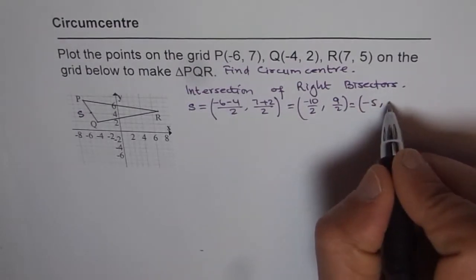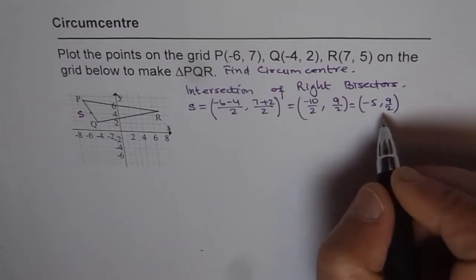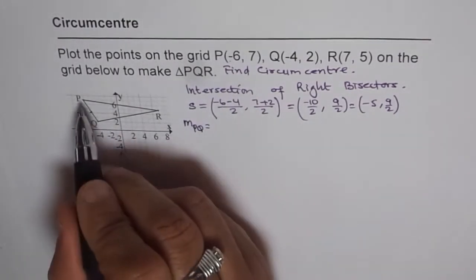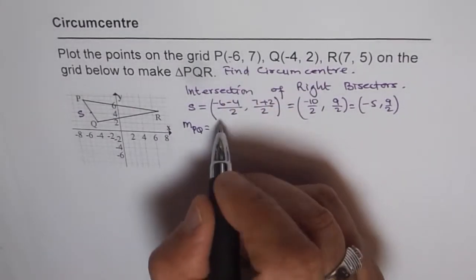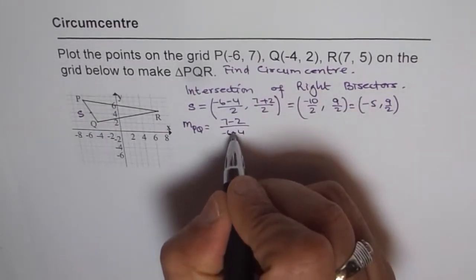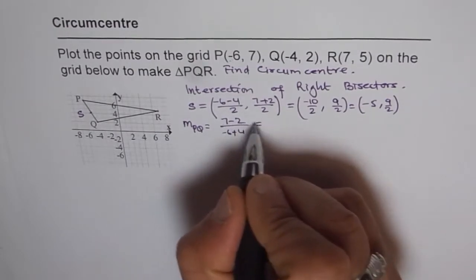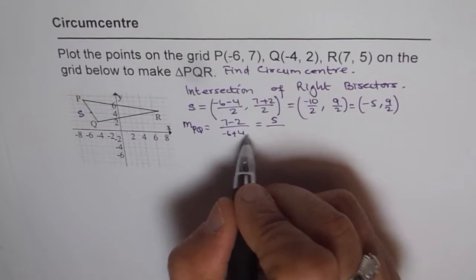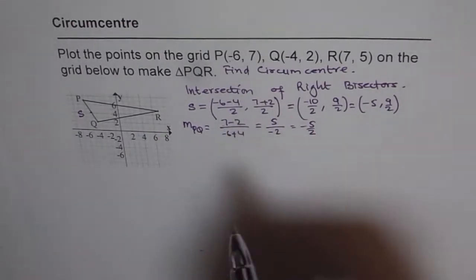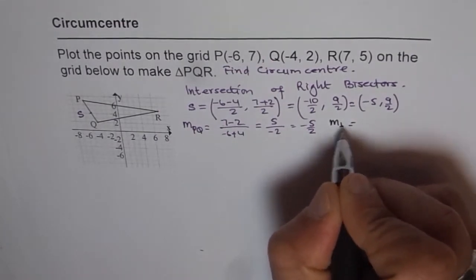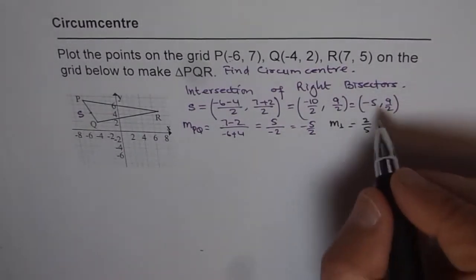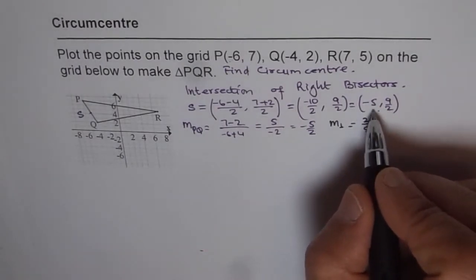Now let's find the slope of PQ. The slope is rise over run: (7 - 2) / (-6 - (-4)) = 5 / (-2) = -5/2. The slope of the perpendicular bisector is the negative reciprocal, which is 2/5. We know the point S is (-5, 9/2), so we can now find the equation of the right bisector.